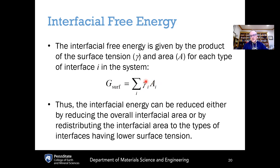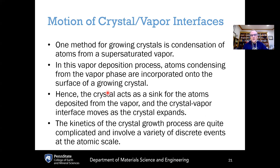To minimize the total interfacial free energy, you want to favor interfaces that have a lower surface tension — reducing gamma — and/or lower the overall interfacial area A. Reducing the product of the two gives you the reduction of the overall surface free energy.